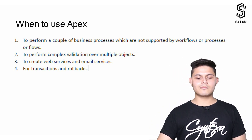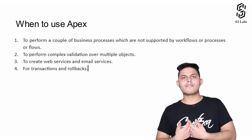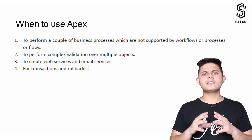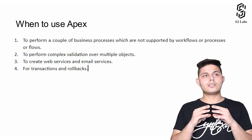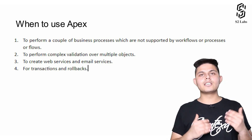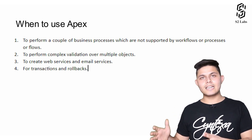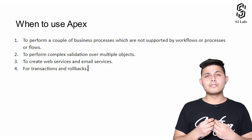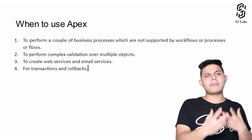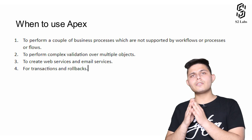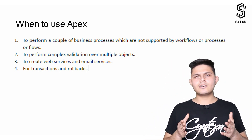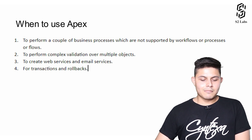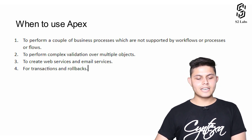To perform complex validations over multiple objects. You must have already learned about validation rules — they help us create some conditions to make sure that the data being entered by the user meets certain criteria. And if you want to create a validation rule which requires multiple objects that may or may not be related to each other, then you need to write down Apex, and preferably triggers in Apex, which we'll learn about later.